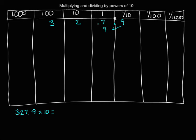7 ones will become 7 tens, 2 tens will become 2 hundreds, and 3 hundreds will become 3 thousands. Each of the digits will move one place to the left on the place value chart. So 327 and 9 tenths times 10 equals 3,279.